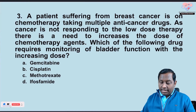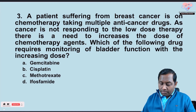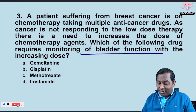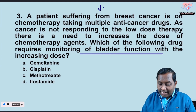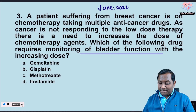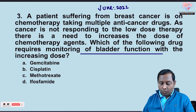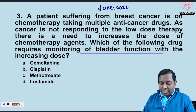The next question is about a patient with breast cancer on chemotherapy taking multiple anti-cancer drugs. The cancer is not responding to low dose therapy and the dose needs to be increased. Which of the following requires monitoring of bladder function? Options include gemcitabine and cisplatin. Cisplatin — a platinum compound — is associated with nephrotoxicity and ototoxicity; nephrotoxicity is a very specific side effect here.